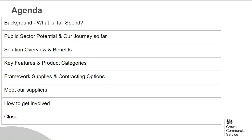I'll start today's webinar providing you with an overview of what we're going to cover. Firstly, we'll do a brief introduction on the background of tailspend. We'll then cover the public sector potential and our journey so far, followed by an overview of the solution, its benefits, key features, product categories, framework suppliers and contracting options available. Penultimately we'll hand over to our suppliers who will introduce you to their organisations and solutions, and then we'll cover next steps and how to get involved before moving to a close.